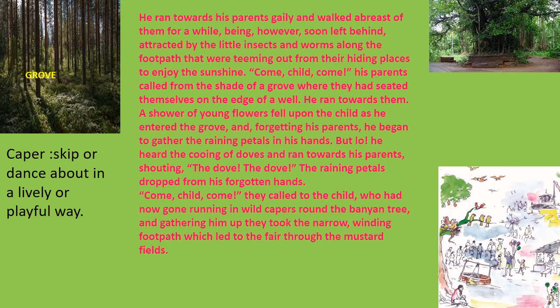The grove is a typical place with trees, and there are some steps on the side where they're sitting to rest. He runs towards them, and along the way some flowers fall on him from a tree. He begins gathering the flowers, then hears the sound of doves and wants to go towards them. The child's concentration moves from one thing to another — insects, then doves, then flowers — his attention continually getting distracted.